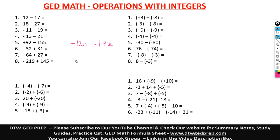You can have something like positive 92y minus 155y. How do you solve this? That's why it's important for you to get to know the rules.